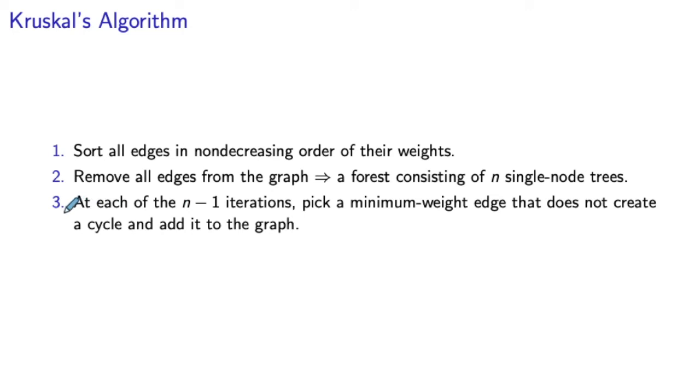And then on the third step, we perform n minus one iterations where at each iteration we pick a minimum-weight edge that does not create a cycle and add it to our constructed tree.